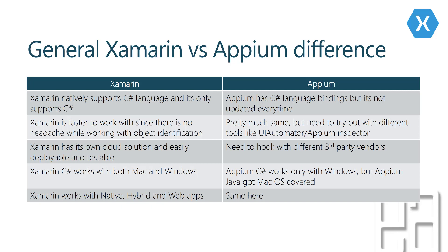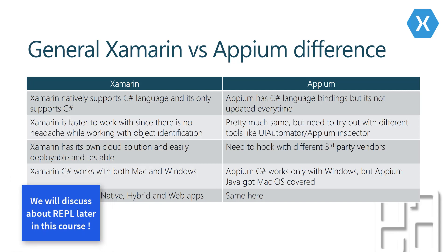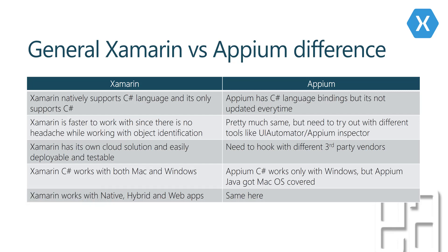Xamarin is faster to work with since there is no headache with object identification — because Xamarin UI test is natively supported in Xamarin.iOS and Android. Appium is similar but requires trying out different tools like UI Automator or Appium Inspector for object identification. Xamarin also has its own cloud solution and is easily deployable and testable on multiple different physical devices, whereas with Appium you need to hook up with third-party vendors for physical device testing on cloud.